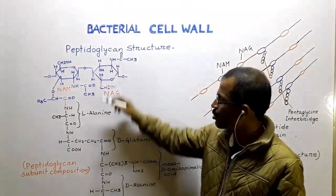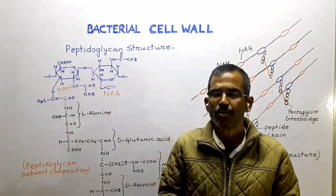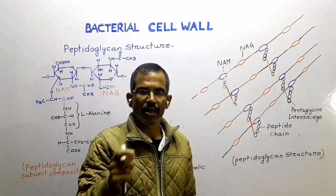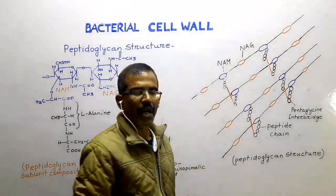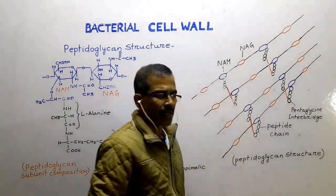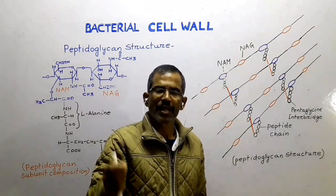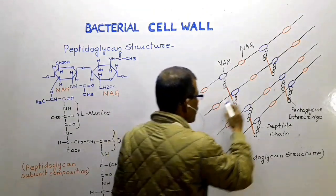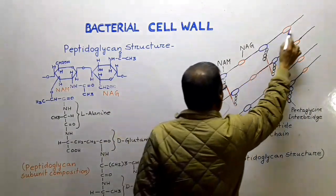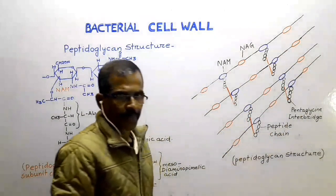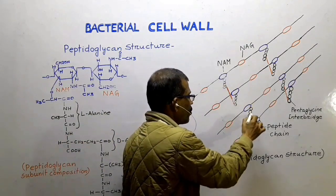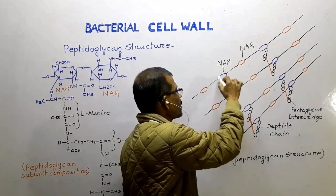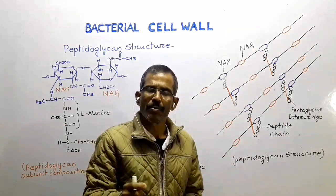The backbone of peptidoglycan consists of alternating residues of N-acetyl-D-glucosamine and N-acetylmuramic acid connected by glycosidic bonds to form the peptidoglycan chains. A peptide chain of four alternating D- and L-amino acids is connected to the carboxyl group of N-acetylmuramic acid, forming a strong mesh-like polymer.